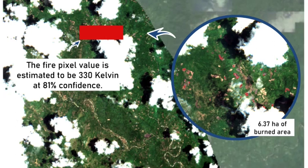Near-real-time active fire data from the Fire Information for Resource Management System, or FIRMS, coincided with the detected burned areas from the SVM classification. The fire pixel value is estimated to be at 330 Kelvin at 81% confidence.